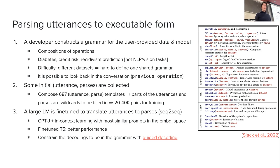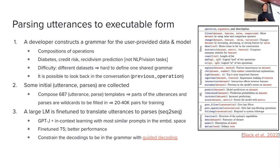They also did constraint decoding to stay within the grammar, because large language models can produce synonyms and be more creative — but in this case we don't really want that. We want the language model to stick with the grammar, because if it changes the function name 'explain' into 'justify' and your 'justify' function doesn't exist in your Python code, then you will get an error.